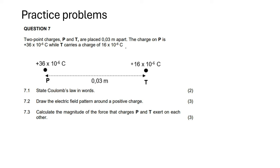Let's try some practice problems. Question 7: Two point charges P and T are placed 0.03 meters apart. The charge on P is positive 36 × 10⁻⁶ coulomb — this is Q₁, positive 36 microcoulomb. The charge on T is positive 16 × 10⁻⁶ coulomb — this is Q₂. The distance between them is 0.03 meters, meaning P and T are placed 0.03 meters away from each other.